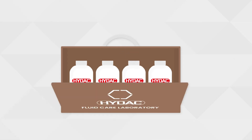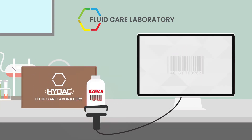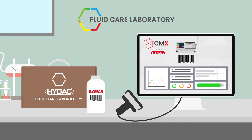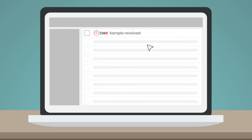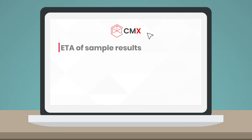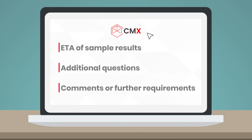The samples are then sent to the FluidCare laboratory, where the technicians will scan the sample's barcode and then have access to all of the relevant system information on the CMX laboratory portal. At this point, you will automatically receive an email to notify you that the sample has been received, along with a rough ETA for when you can expect your results back. A question can also be included in this email, asking if you require any additional laboratory analysis or have any comments.